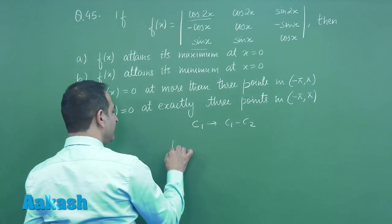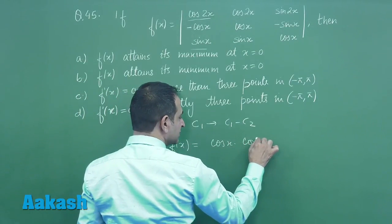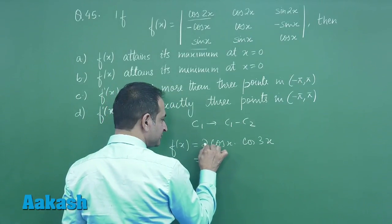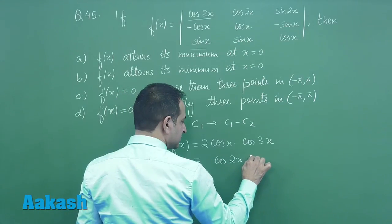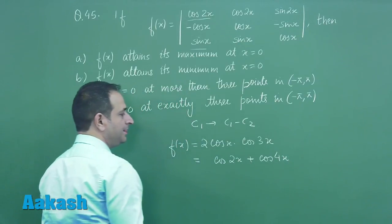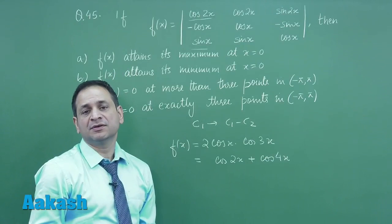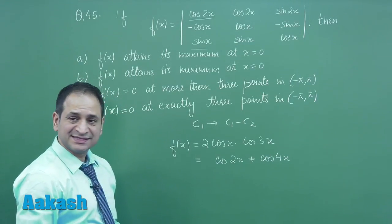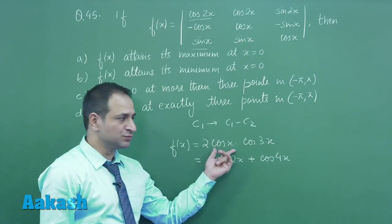...we will have function f clearly as cos x into cos 3x, which can be written as cos 2x plus cos 4x. Now the first part is we have to tell what is the maximum value, and whether the maximum value is attained at x equal to 0. You can clearly see this value is lying between minus 1 to 1.